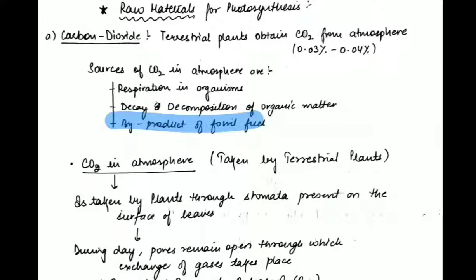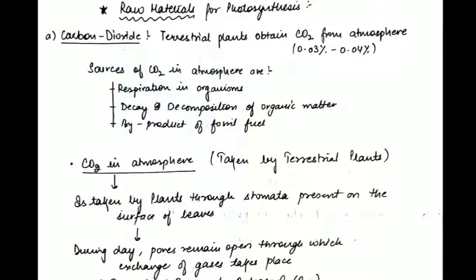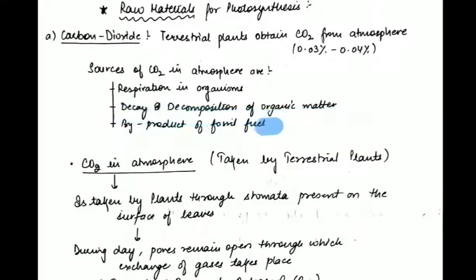Thirdly, carbon dioxide is a by-product of fossil fuel combustion. The major fossil fuel we know is coal, which is carbon. When we burn coal for any use, that carbon combines with atmospheric oxygen and forms carbon dioxide, which is then released into the atmosphere. So to summarize, the three sources are: first, respiration; second, decay of organic matter; and third, fossil fuel combustion.